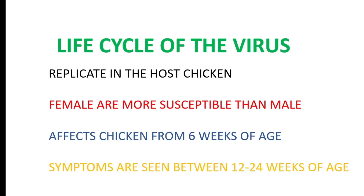Now let's look at the life cycle of the herpesvirus. The virus replicates in the host chicken's lymphoid tissue. Females are more susceptible than males in terms of susceptibility to the disease. It usually affects chickens from six weeks of age, and the symptoms are seen between 12 to 24 weeks of age.